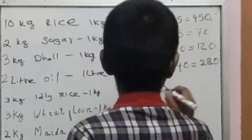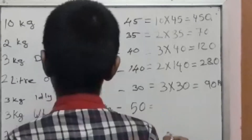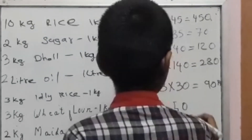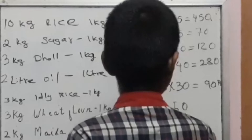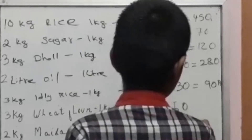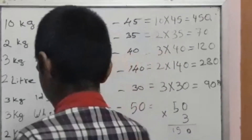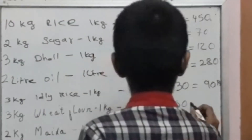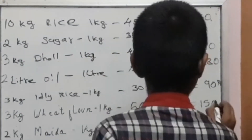3 kg wheat flour. 1 kg equal to 50. 50 into 3. 3 into 0 is 0. 3 fives are 15. The answer is 150. 3 kg wheat flour equals 150.